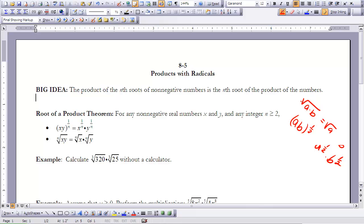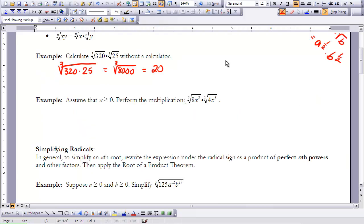I'd like to have you try this example without your calculator: the third root of 320 times the third root of 25. We could say that is the third root of 320 times 25, which is the third root of 8,000. We know that the third root of 8,000 is 20.